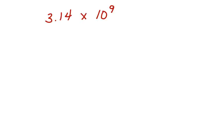Do you know how to work with values that are written in scientific notation? Let's take a look at how to take an expression written in scientific notation and convert it to a value. Here's our first one. We have 3.14 times 10 to the 9th power. This is an example of an expression that's written in scientific notation.